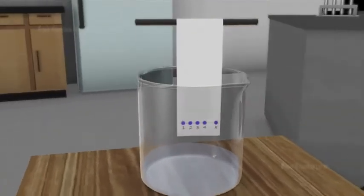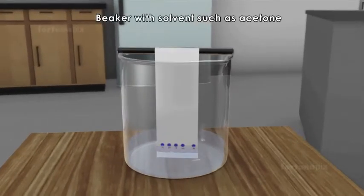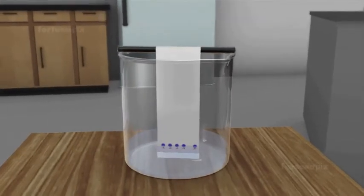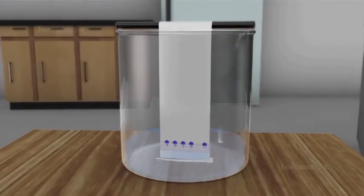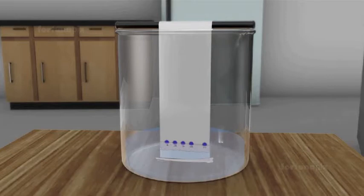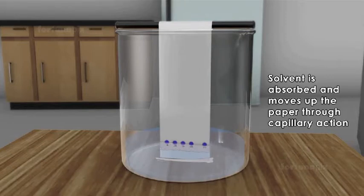Suspend the paper in the beaker containing a solvent such as acetone. Ensure that the paper is dipped in the solvent and that the solvent level is below the pencil line.